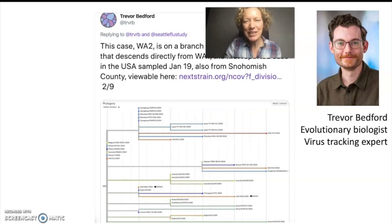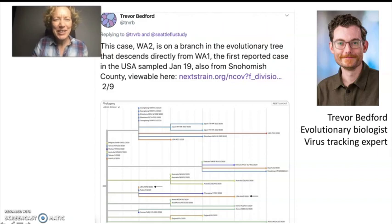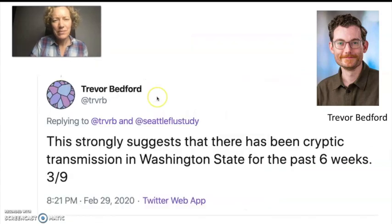So what he's saying is that this case, WA2, so the second case in Washington, is on a branch in the evolutionary tree that descends directly from WA1, the first reported case in the USA, sampled January 19th, also from Snohomish County. So this strongly suggests that there has been cryptic transmission in Washington state for the past six weeks. So he thinks that the virus has been transmitted from person to person in Washington state for at least since January 19th. And so obviously that is huge news and it's worrisome.